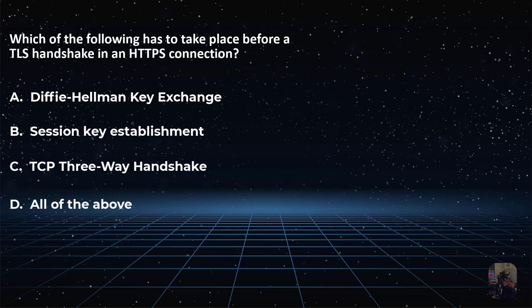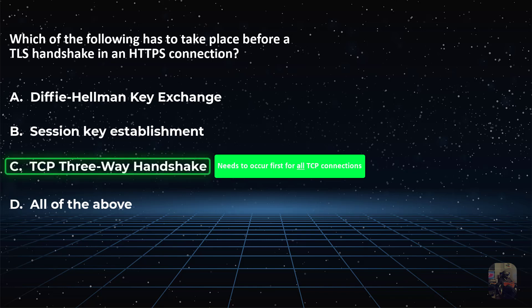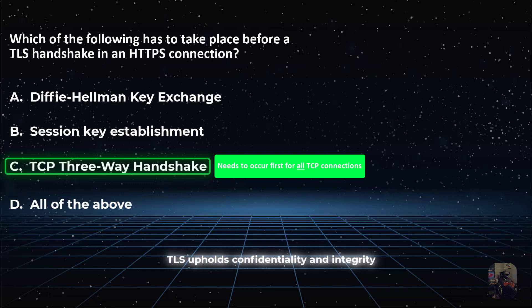The correct answer is choice C. A TCP three-way handshake has to take place not just for HTTPS connections, but for all TCP connections. Once the TCP three-way handshake is complete, then the client and server proceed with the TLS handshake, after which the data exchanged is completely encrypted, preventing man-in-the-middle attacks and upholding confidentiality and integrity.